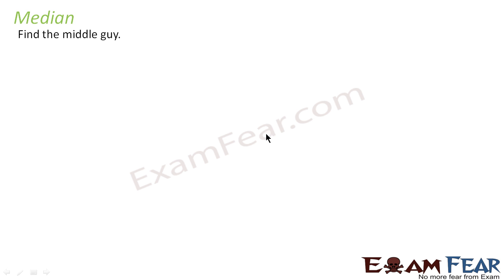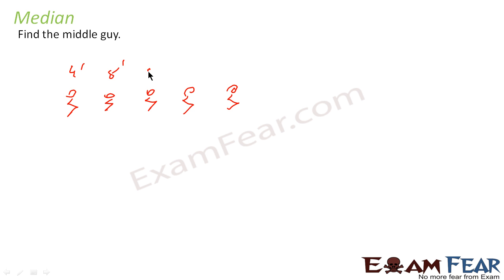For example, we have to find the middle guy. Let's suppose there are five guys here. One guy is four feet, the second is five feet, the third is five point five feet, the fourth is six feet, and the fifth is six point five feet. You have to find the middle guy. First, you have to arrange in ascending order — since it is already arranged, you need not do anything. Then you find the middle guy.